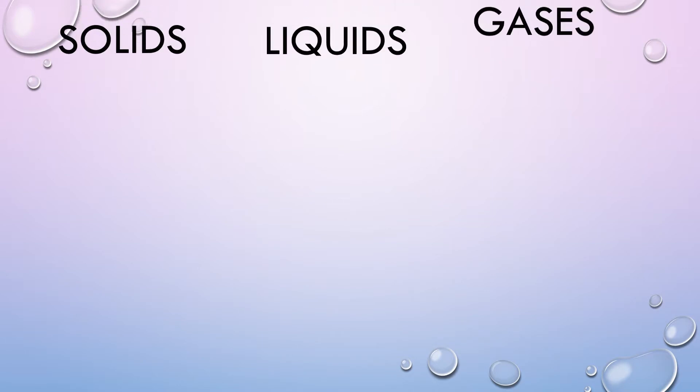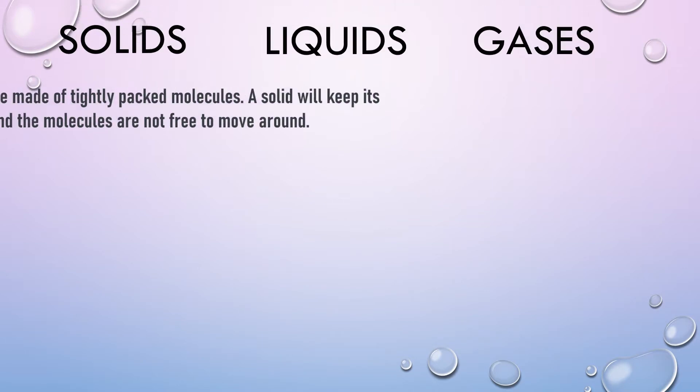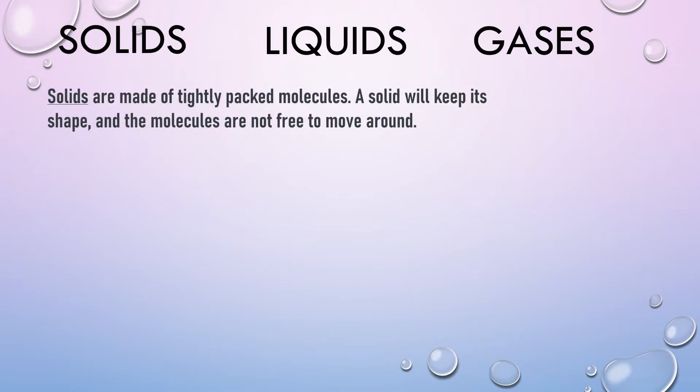Let's review solids, liquids, and gases. Solids are made of tightly packed molecules. A solid will keep its shape and the molecules are not free to move around.